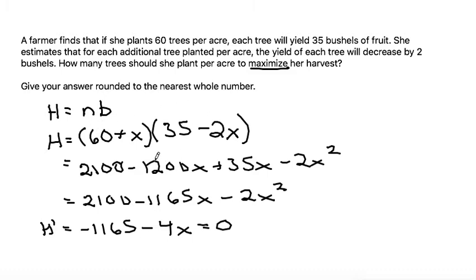Actually, that should be not 1200 but 120. Let's go back a second. We need to do negative 120 plus 35, so this should be negative 85. So the harvest function is H = 2100 - 85x - 2x squared.